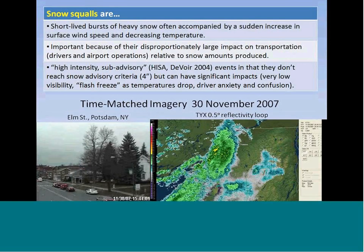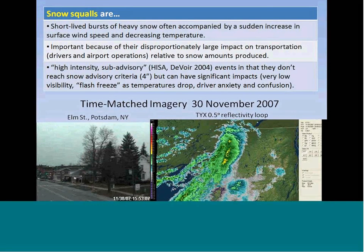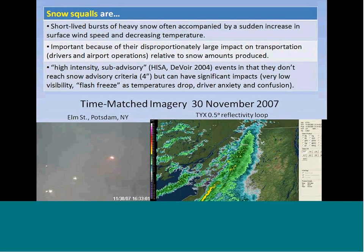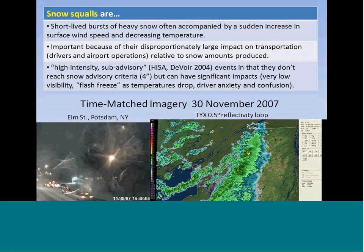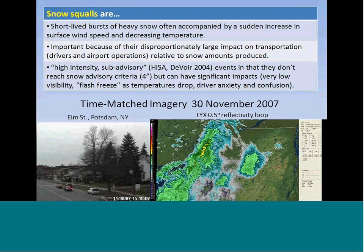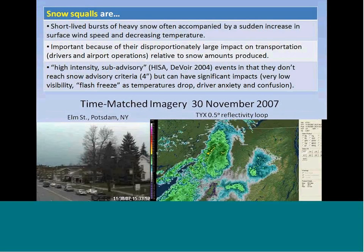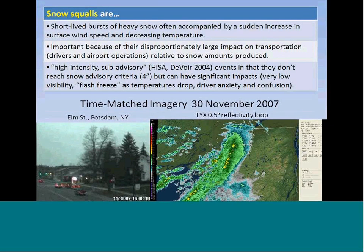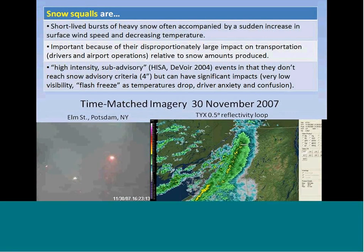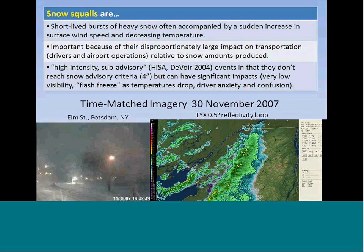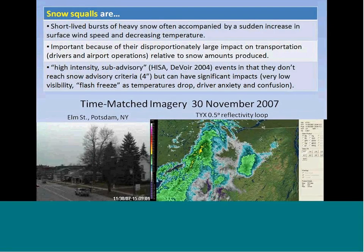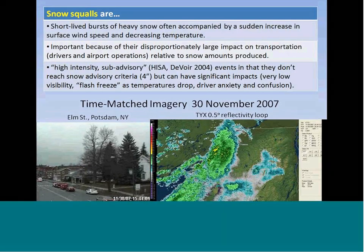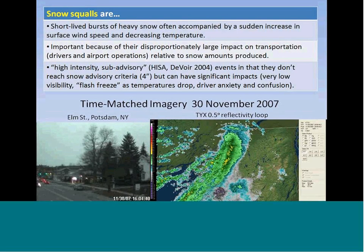We're talking about short-lived bursts of heavy snow, which are often accompanied by a sudden increase in surface wind speed as well as decreasing temperature. Their importance is that they disproportionately have a large impact on transportation — both for drivers and airport operations — relative to the small amount of snow that's generally produced. They are low-intensity sub-advisory events that still have significant impacts, including very low visibility and flash-freeze situations as temperatures drop behind the squall.